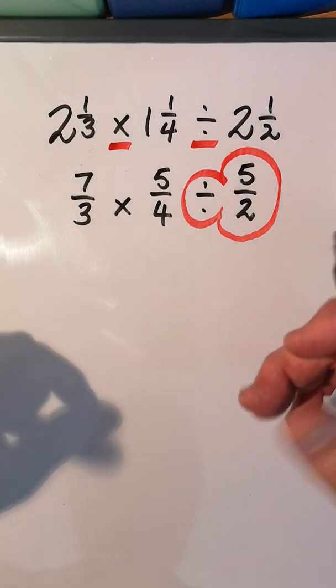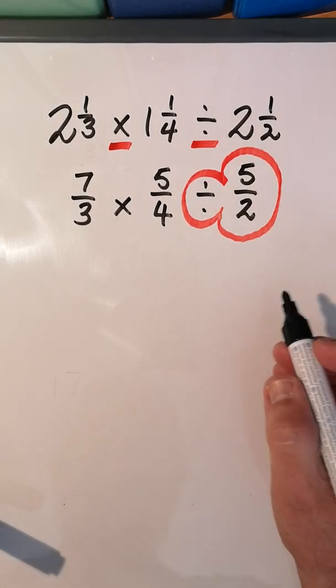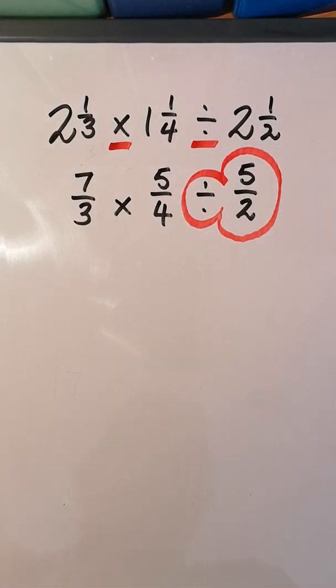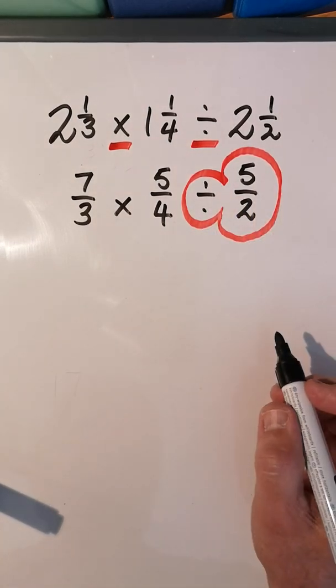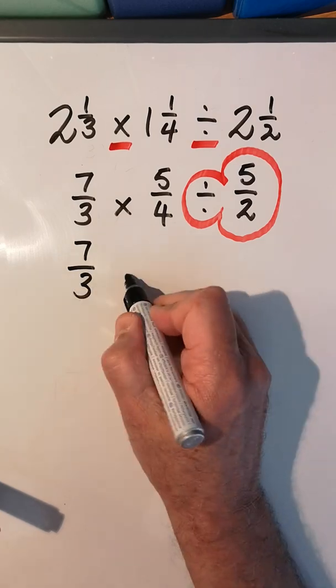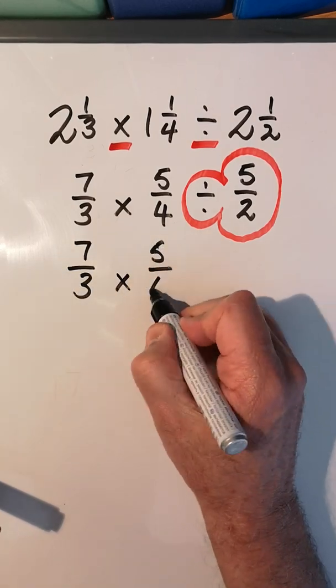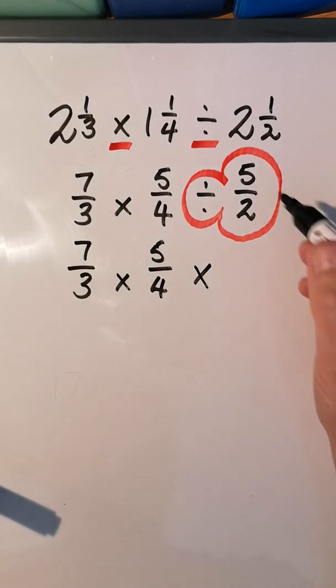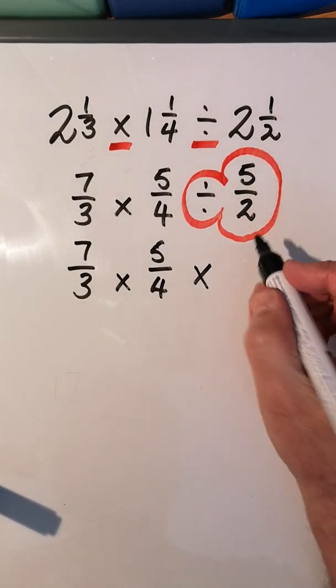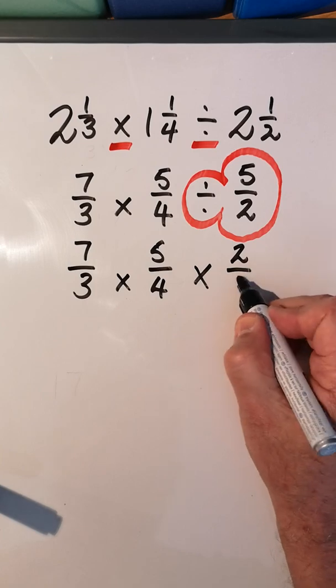So it's always the fraction that comes after the division sign. So 7/3 times 5/4, multiply, and 5/2 - we flipped it over so it becomes 2/5.